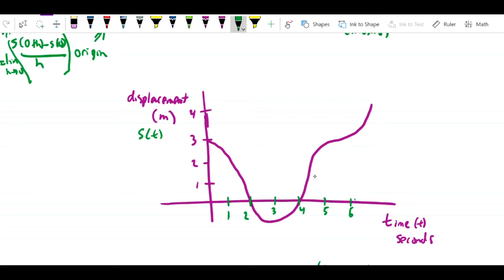Let me ask: what's the average velocity between t equals 4 and t equals 6? Here we have s(4) equals 0, and s(6) we can read off the graph is approximately equal to 3.